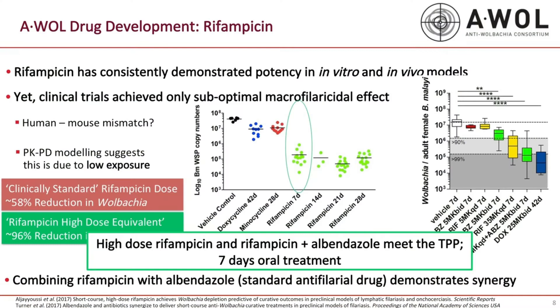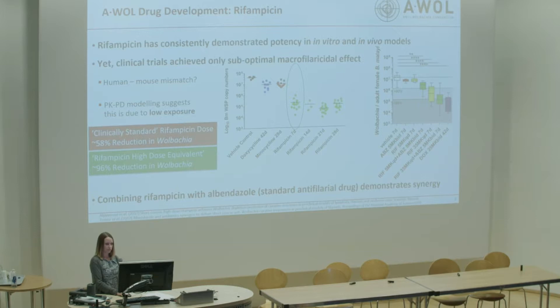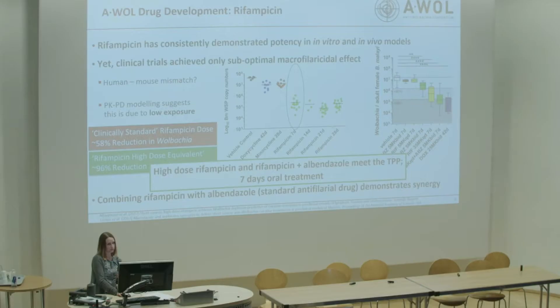However, at a high dose of rifampicin you get a 96% reduction in Wolbachia. We've also done combination studies with albendazole — one of the standard anti-filarial drugs — and found that combining rifampicin with albendazole produces synergy. At the standard dose in the mouse you don't cross the 90% threshold, but adding albendazole pushes some of the worms over that threshold. We've therefore defined that high-dose rifampicin and rifampicin plus albendazole can meet our TPP of seven days' treatment.